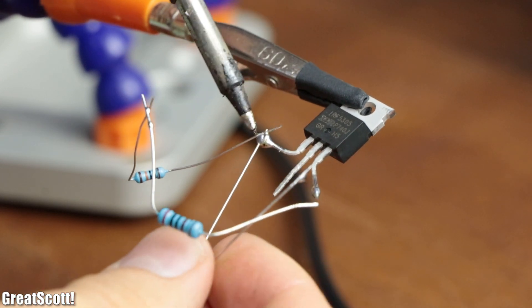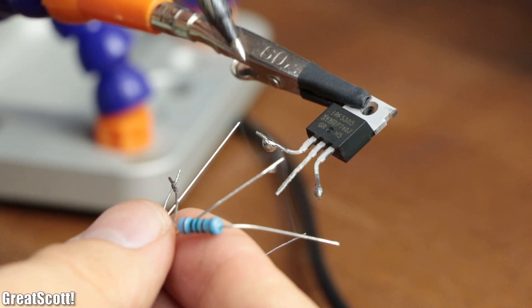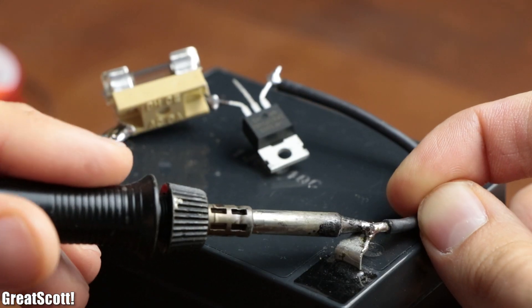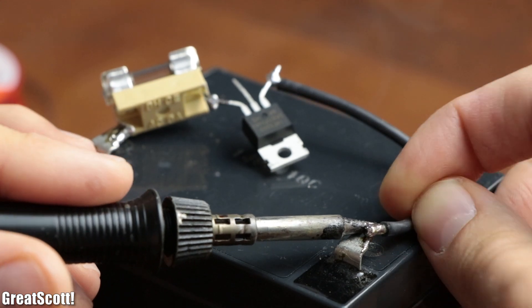Now since we know all the important facts about this reverse voltage protection circuit, it is time to replace the simple resistive loads with our battery.